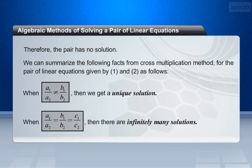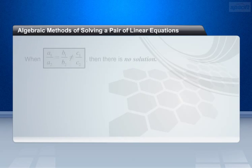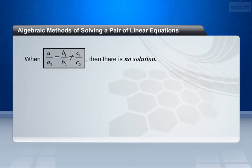When a1 by a2 equals b1 by b2 equals c1 by c2, then there are infinitely many solutions. When a1 by a2 equals b1 by b2 is not equal to c1 by c2, then there is no solution.